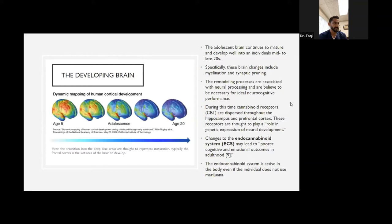This is how the developing brain looks like. If you look at the far extreme left picture, age five, mostly everything is green, which means that's in development. As it gets more and more blue, that means it's getting more and more matured. So if you look at the front part of the brain, it's the last one to matured. At about age 20, that gets blue. But adults continue to mature and develop well into an individual mid to late twenties. Specifically, these brain changes include myelination and synaptic pruning, which mean how you mature the connections between the brain. The remodeling processes are associated with neural processing and are believed to be necessary for ideal neurocognitive performance, which means that once you develop these connections between the different parts of the brain so that they can talk to each other, that's how you develop your ability for cognition and memory and performance.